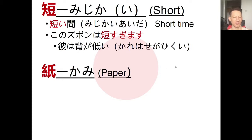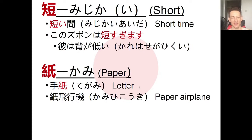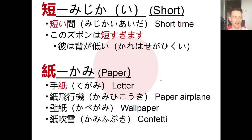Next is 紙 (kami), meaning 'paper.' In the sentence, we saw tegami, meaning 'letter' - hand plus paper, like something you'd send in the mail. Interestingly, in Chinese these same characters mean 'toilet paper.' Other vocabulary: kami hikooki (paper airplane), kabegami (wallpaper - note the pronunciation changes from ka to ga), and kami fubuki (confetti, literally 'paper blizzard,' since fubuki means blizzard).